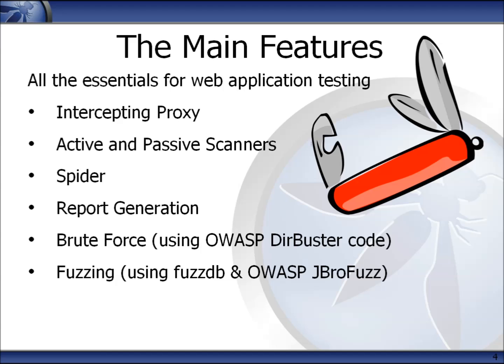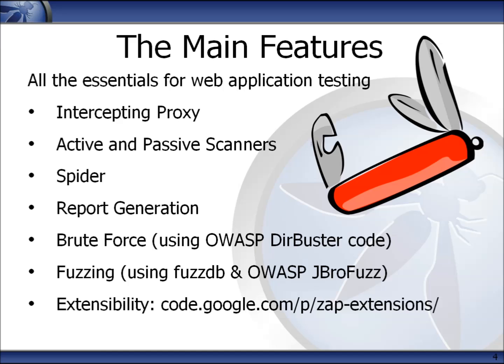You can use fuzzing to find more subtle vulnerabilities that the automated scanners cannot find. You can also easily extend ZAP, and there is in fact a separate project dedicated to providing ZAP extensions. These can be added to ZAP by just dropping a file into the relevant directory. So have a look at the ZAP extensions project on Google Code to see the latest extensions that are available.